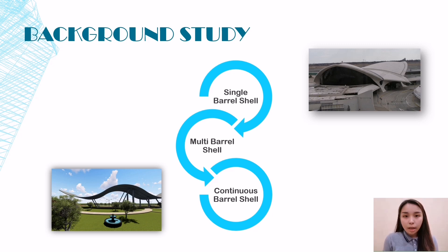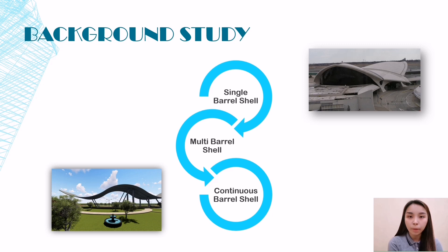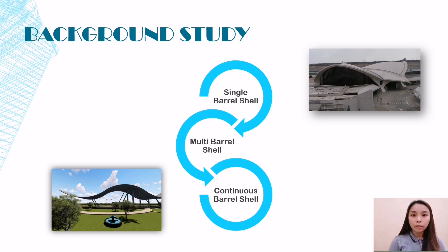There are three types of barrel shell commonly used in the construction of buildings: single barrel shell, multi-barrel shell, and continuous barrel shell. Single barrel shell looks like a very long arch, usually used at a long rectangular building, such as the dome shell at the Pantheon in Rome. Multi-barrel shell, such as Eero Saarinen's JFK International Airport in New York. Continuous barrel shell, such as airports, which require multi-shells to cover its floor space.